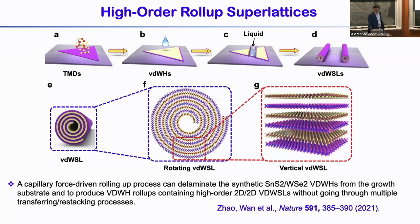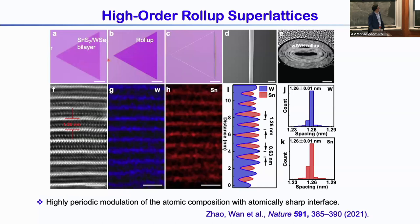This shows the image of the heterostructure bilayer and after roll-up to form nanoscrolls. Looking at the cross-section TEM, you can see a roll-up structure. At high resolution, you can clearly see alternating layers of WSe2 and SnS2 — a highly periodic structure with very narrow distribution of periodicity. This actually creates a totally new artificial material.